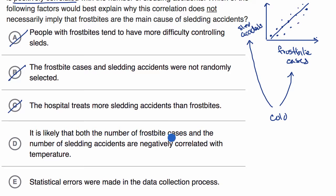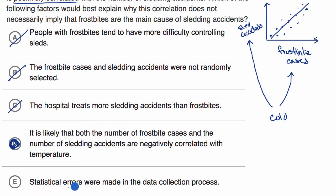The next choice says: it is likely that both the number of frostbite cases and the number of sledding accidents are negatively correlated with temperature. This is exactly what we were talking about — being negatively correlated with temperature is the same as being positively correlated with cold. The colder it is, the more likely you are to have more frostbite cases or sledding accidents. Cold might be the underlying cause driving both. I like this choice a lot. The final choice says: statistical errors were made in the data collection process. That's similar to the earlier data quality answer — it speaks to the data itself not being good, but doesn't explain why the correlation does not imply that frostbites are the main cause of sledding accidents.